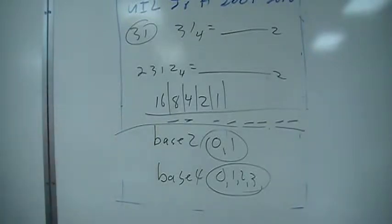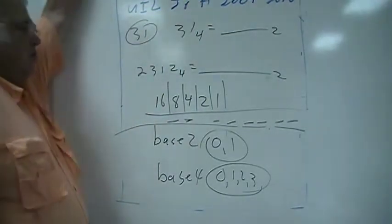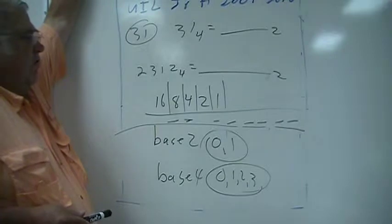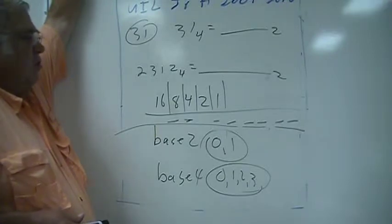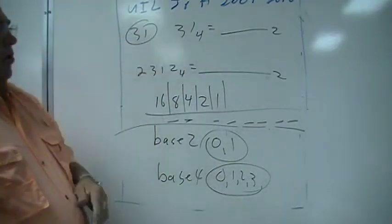Alright. Now, on number 31, I want you to change from base 4 to base 2. So I'm going to show you a process that's pretty easy to change from base 4 to base 2. I'm going to show you the process here with the bigger number, and then we'll go back and do this one up here.